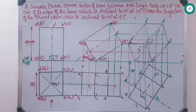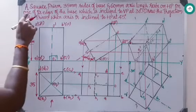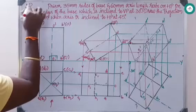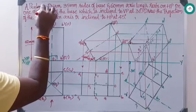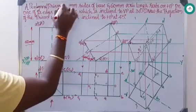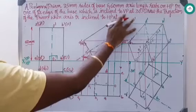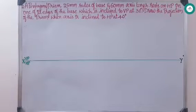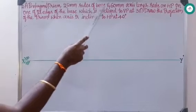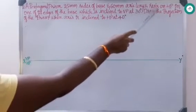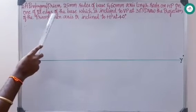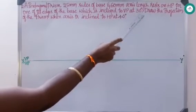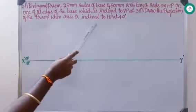Before going to the next problem, have a look at this particular problem. It is given a square prism — I am changing this to a pentagonal prism. Instead of 35 mm, I am re-changing this to 25 mm and HP inclination to 40 degree. So re-changing the question: a pentagonal prism, 25 mm sides of base and 60 mm axis length, rests on HP on one of its edges. This is your first condition of the base, which is inclined to VP at 30 degree — this goes to your third condition.